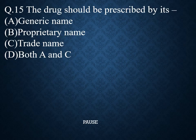Question 15. The drug should be prescribed by its. Option A: Generic name. Option B: Proprietary name. Option C: Trade name. Option D: Both A and C. And the right answer is: Generic name. So the drug should be prescribed by its generic name.